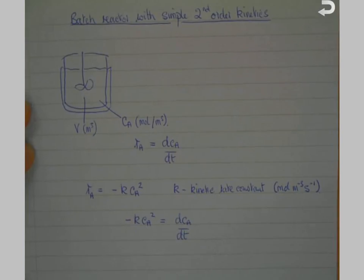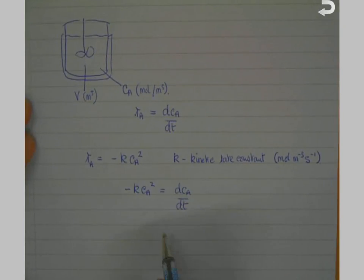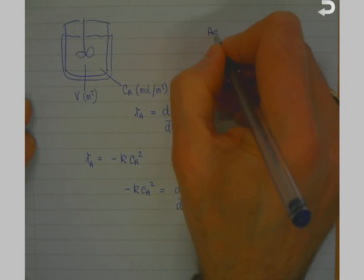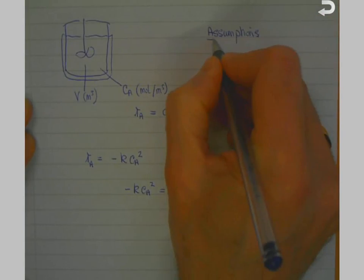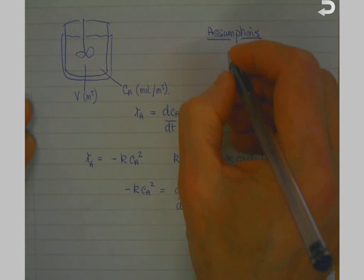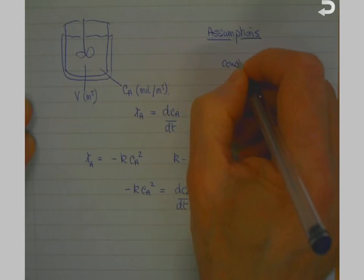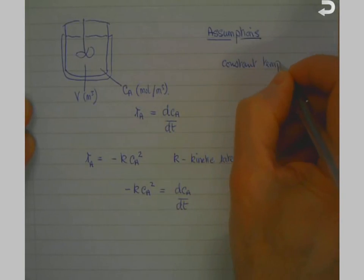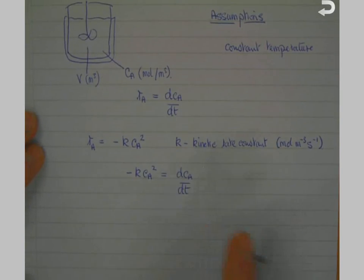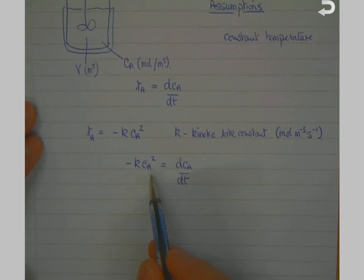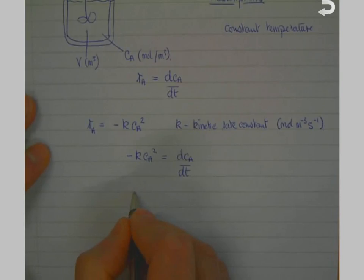Substituting into the top equation gives us minus K·CA squared equals dCA/dt. In order to integrate that, we need to assume that K is constant. The additional assumption required is constant temperature, which means our K is constant — or at least that variations in temperature are sufficiently small that K can be considered very close to constant.